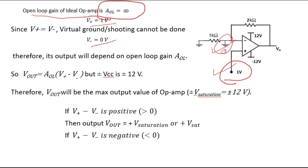Therefore, the output will depend on the open loop gain since this is an ideal op-amp. Virtual ground will not occur because V+ is 1 volt and V− is 0 volt. For virtual ground, the non-inverting and inverting terminals should have the same potential, which they don't here.